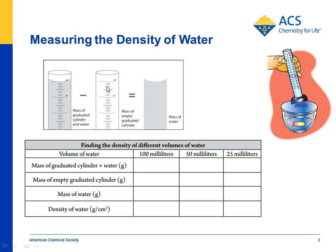So we go through this process with students, and they subtract the mass of an empty graduated cylinder from the mass of the graduated cylinder with water in it, and you end up with the mass of the water. Now, if you know the mass of the water and the volume, you can calculate the density.